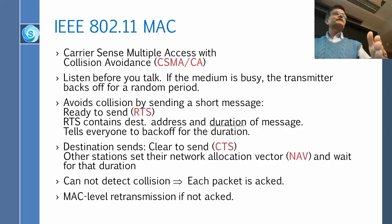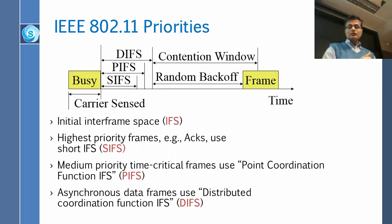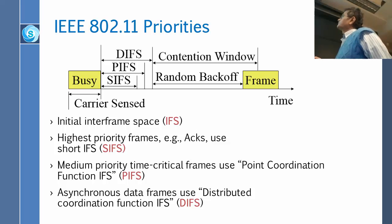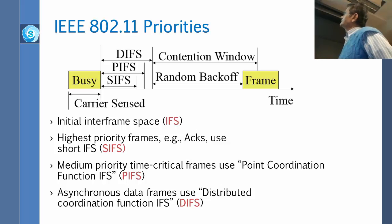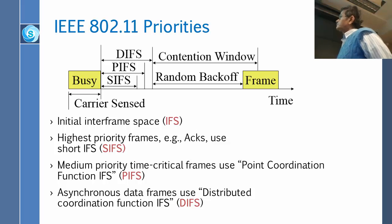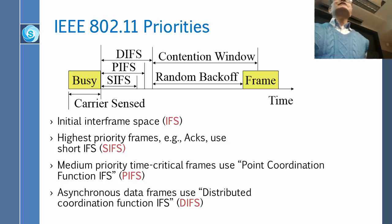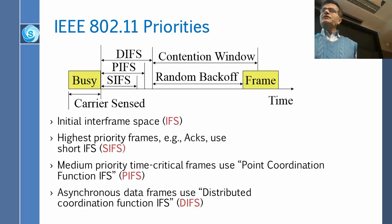They also implement more than one priority. There are three kinds of inter-frame spacing — the time you wait between frames. One is short inter-frame spacing, SIF. It could be medium, called PIF, or it could be large, called DIF. Very time-critical things such as RTS, CTS, and ACK have to be sent right after one SIF — a very small period — and you send them right away.